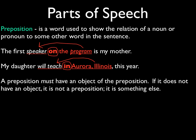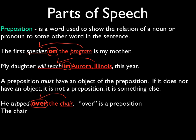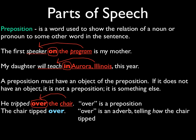A preposition must have an object of the preposition — above, the objects would be 'program' and 'Aurora, Illinois.' If it doesn't have an object, it is not a preposition; it's something else. For example: 'He tripped over the chair' — 'over' is the preposition and 'chair' is the object of the preposition. But what if we said 'The chair tipped over'? 'Over' might look like a preposition, but in this sentence it doesn't have an object, so it is an adverb telling how the chair tipped. Be sure that you do not confuse a prepositional phrase with an adverb.